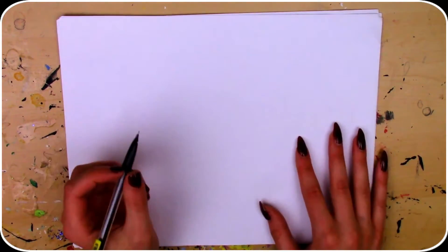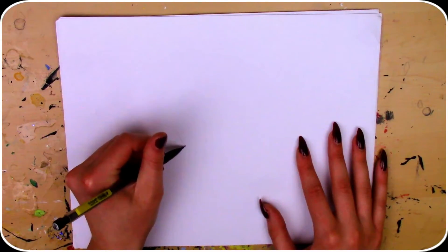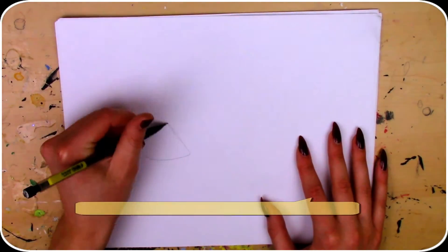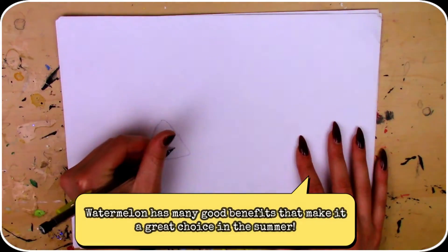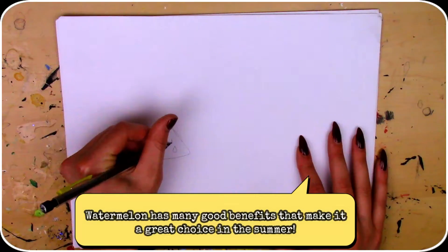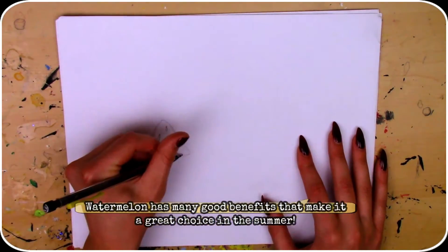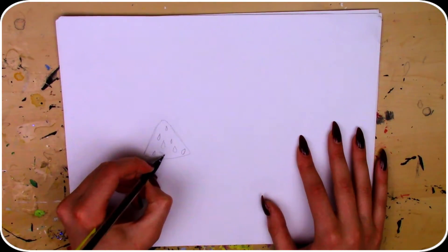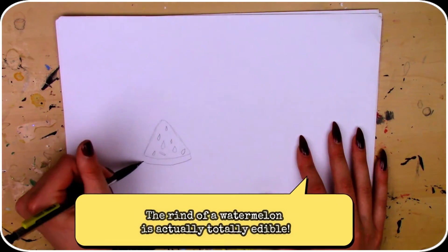While I'm drawing these out I thought I would tell you guys some fun summer fruit facts. Watermelon is a beneficial fruit in the summer for many reasons. They're good in vitamin A and C which helps boost your immune system and they can also prevent heat stroke. And you can actually eat the rind of a watermelon.